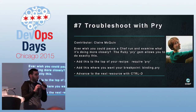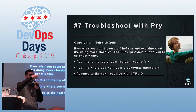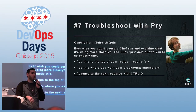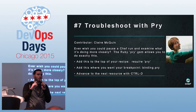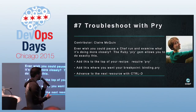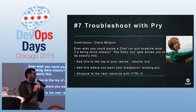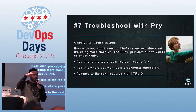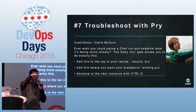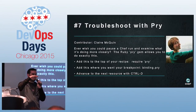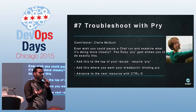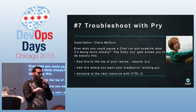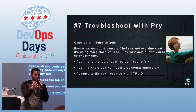Troubleshooting with Pry: if you've ever seen the output of a Chef run and thought, hmm, why did it do that? You can use Pry, which is a Ruby gem that allows you to essentially stop a Chef run in the middle of it, and you can look around, run Ruby commands, and figure out why it's all of a sudden executing Java code or something unexpected.